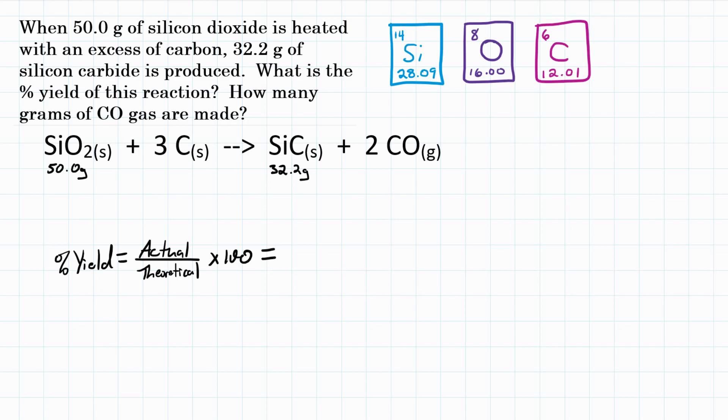So it gives us an amount of our reactant and an amount of our product, and it wants us to calculate the percent yield. So what we're going to do is take our 50.0 grams of SiO2, and we're going to use our stoichiometry to convert that into grams of SiC. Once we get that amount of SiC, we're going to compare it with the 32.2 grams they gave us, and that'll give us our percent yield. So we're going to do a mass-to-mass conversion, mass-to-mass stoichiometry, which is going to be three steps.